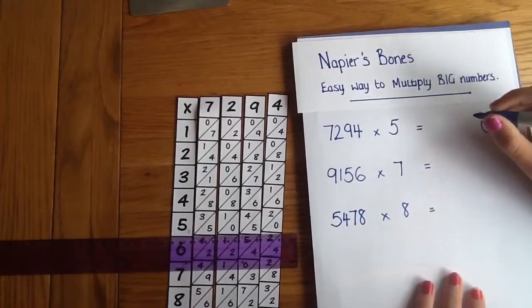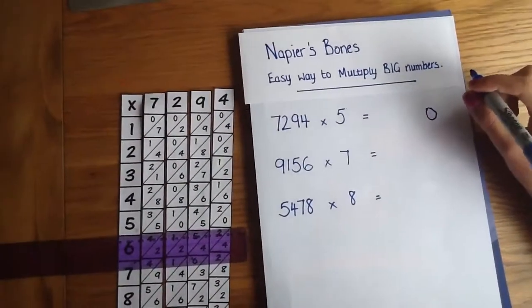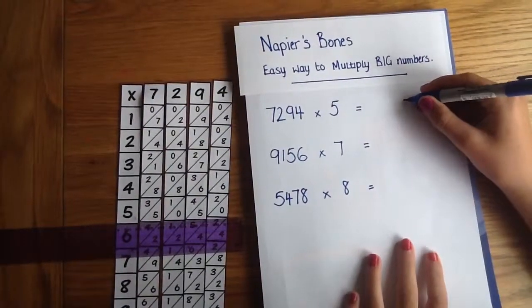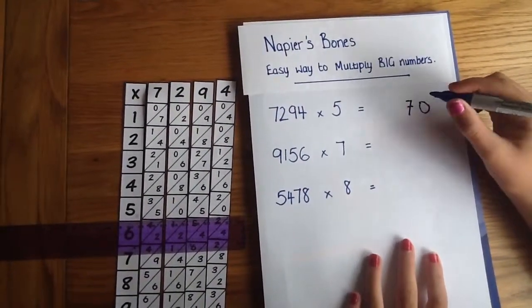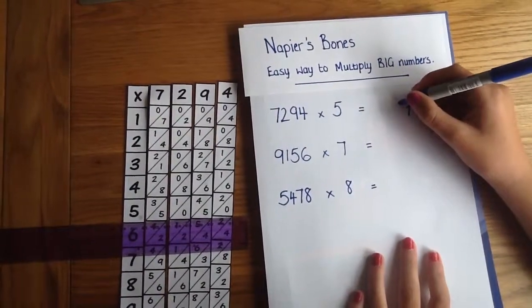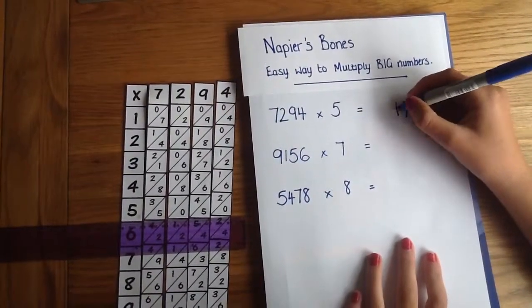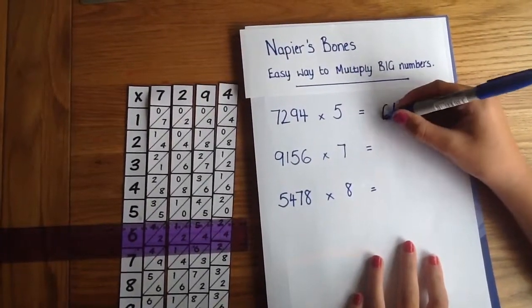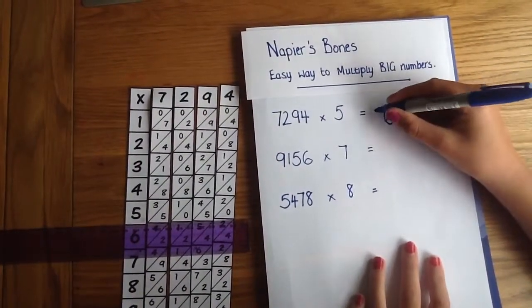Then what we would do is add the 2 and the 5 together to make 7. And then we would add the 4 and the 0 together to make 4. And then we would add the 1 and the 5 together to make 6. And then 3 is on its own.